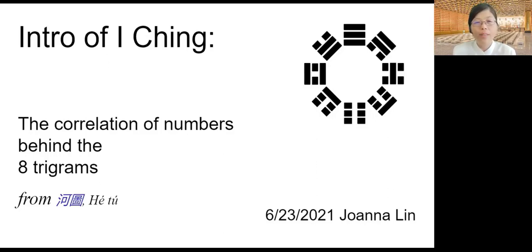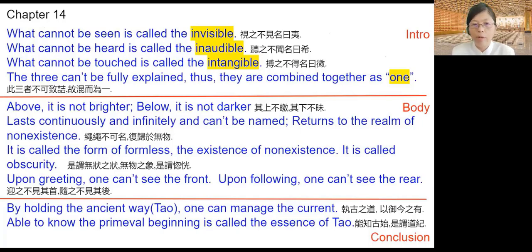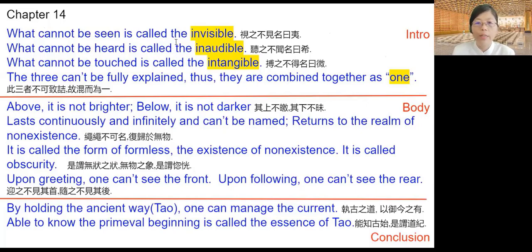This session is really inspired from Chapter 14. In Chapter 14, we talk about Tao's characteristics. Lao Tzu, in the first intro section, gives us the definition of Tao. Tao is invisible, inaudible, and intangible.